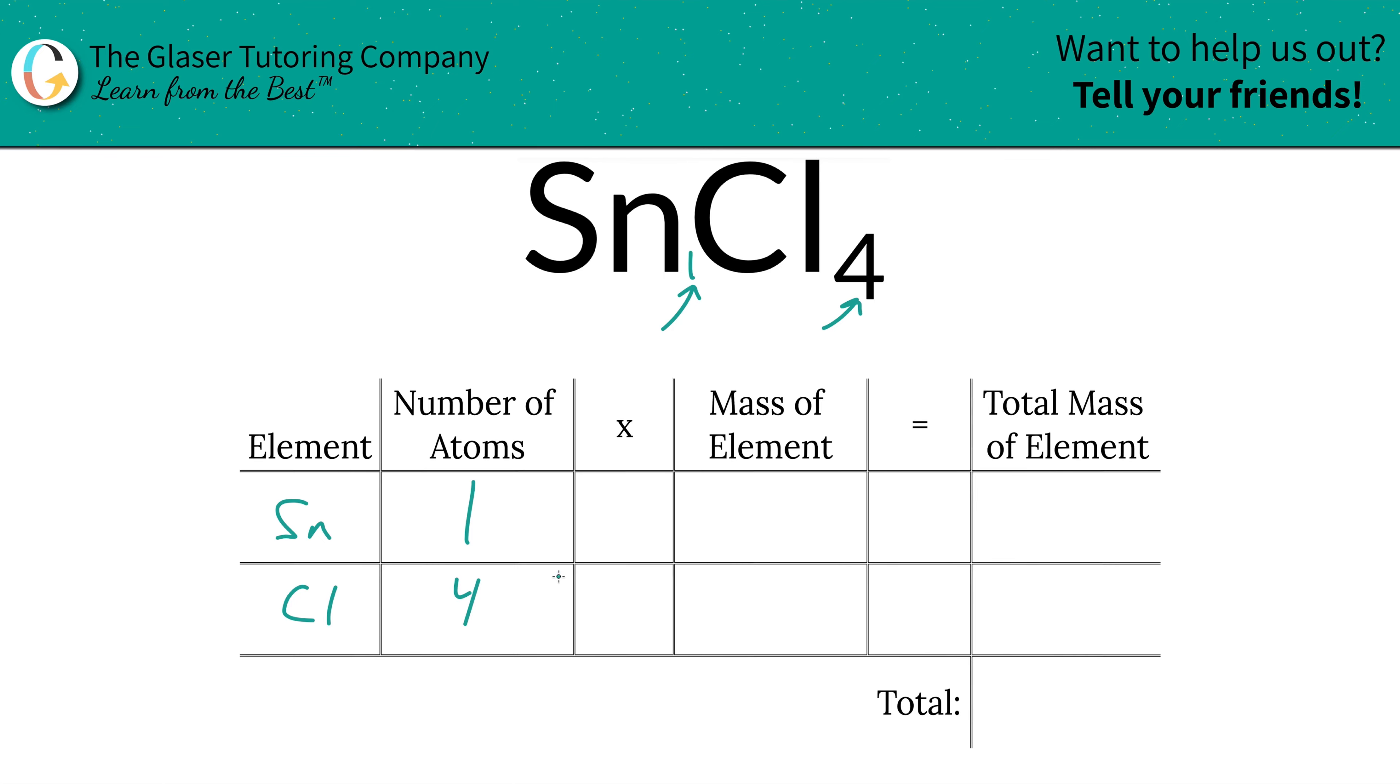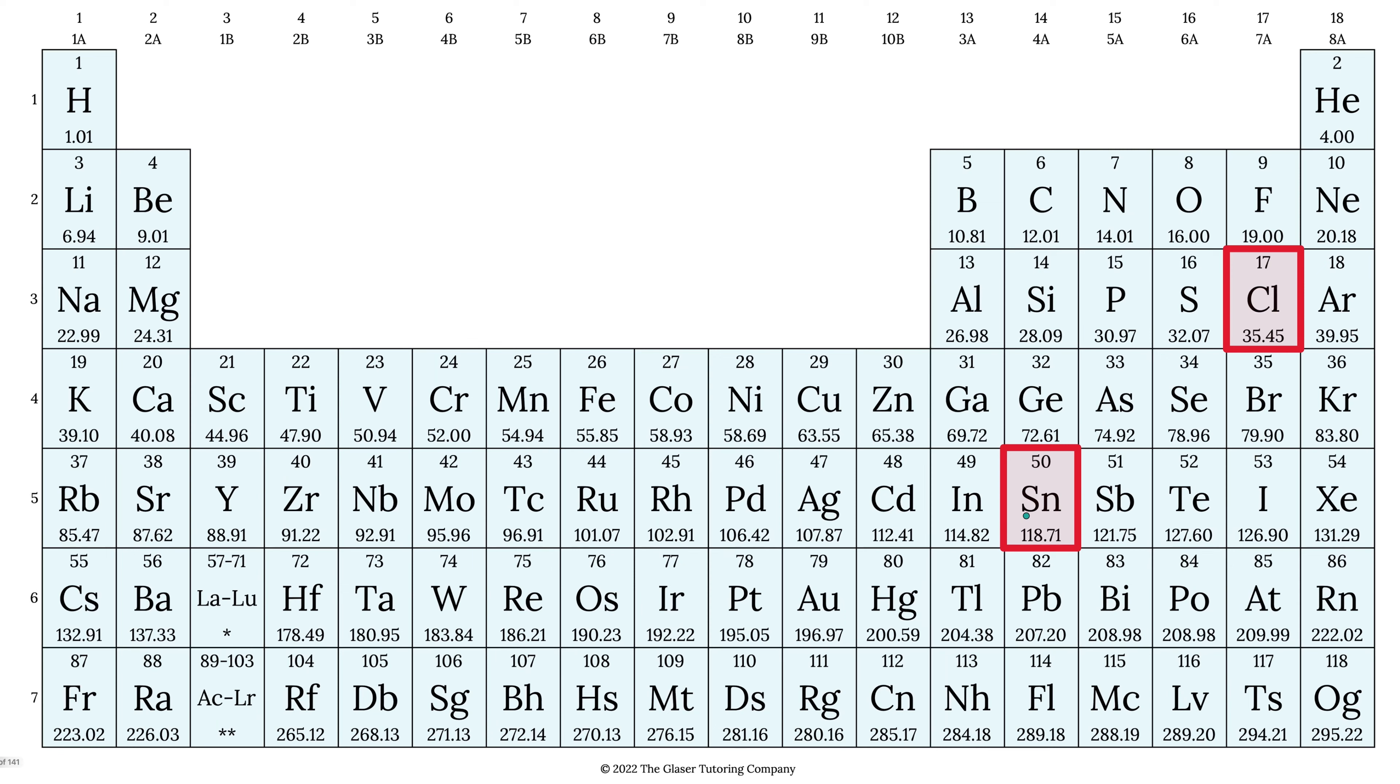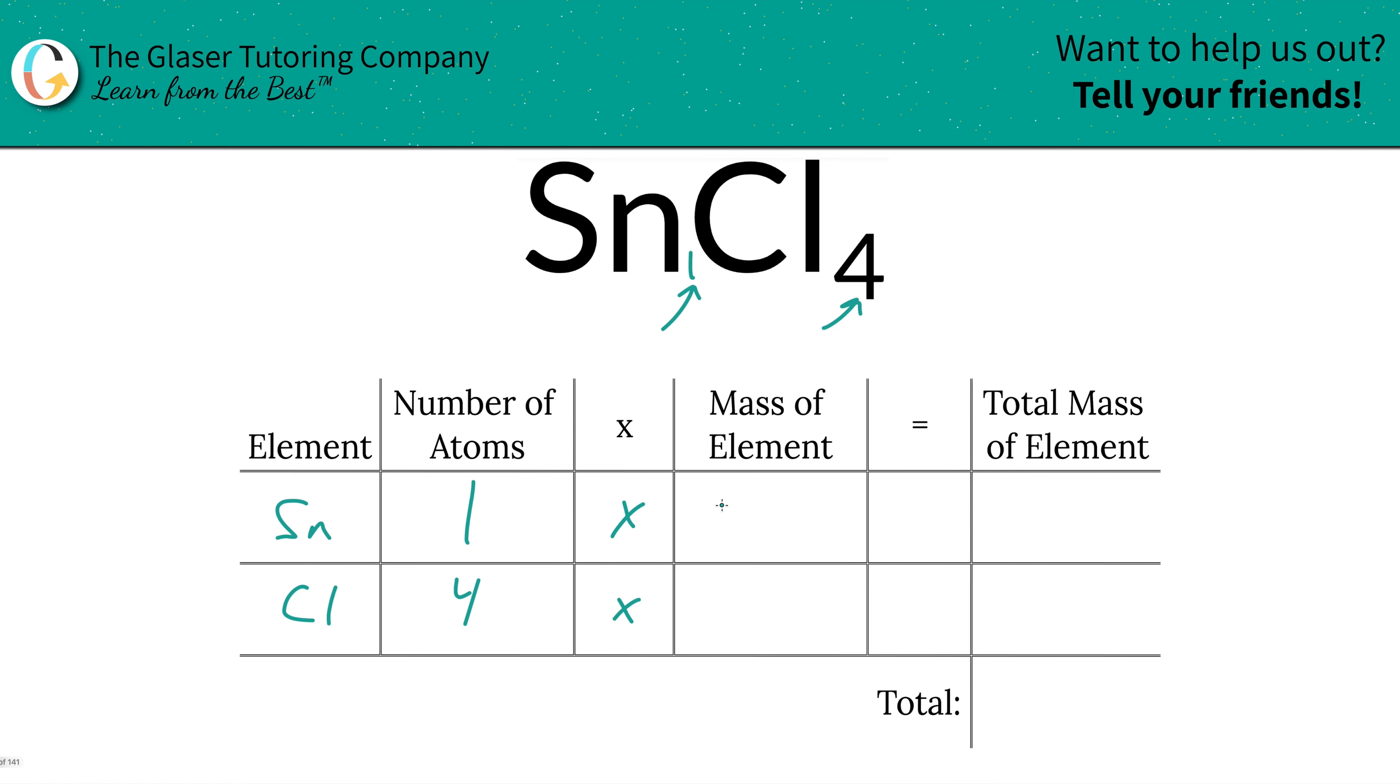So there's one tin and there's 4 chlorine. Then we're going to take those number of atoms and multiply it by the mass of each element. Those masses are always found on the periodic table. So tin is 118.71. Chlorine is going to be 35.45, and that's what we're going to write down now. So this is 118.71. This was 35.45.